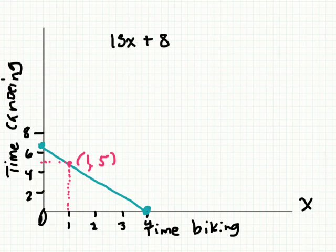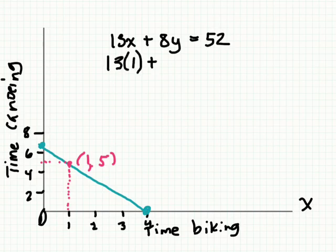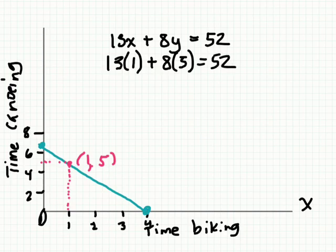13X plus 8Y equals 52. Does this make sense? If she biked for one hour and canoed for five hours, does that add up to 52? What's 13 times 1? What's 8 times 5? 40? No, it doesn't work.